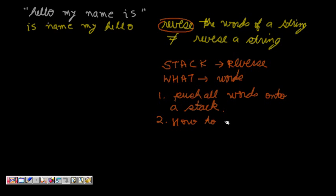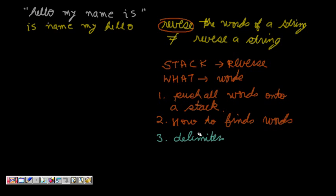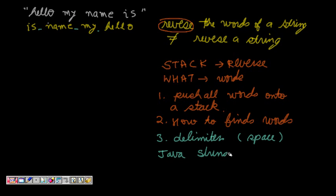The second question is: how will we find words in a sentence? We will use delimiters. The delimiter is a space - wherever we find a space, we say that a new word has started. You can do simple coding to make tokens or words, but here I will use Java's StringTokenizer class.